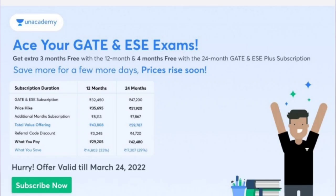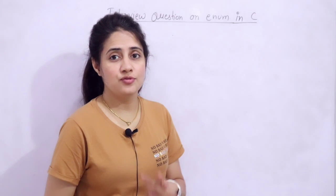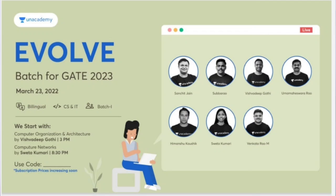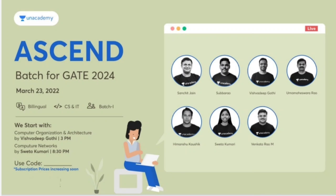If you will use my code JKL10, you will get extra 10% off on these subscriptions. The price details you can see on my screen. The offer is valid till 24th of March, prices rise very soon. If you are planning to take any subscription on Unacademy, it's the right time.